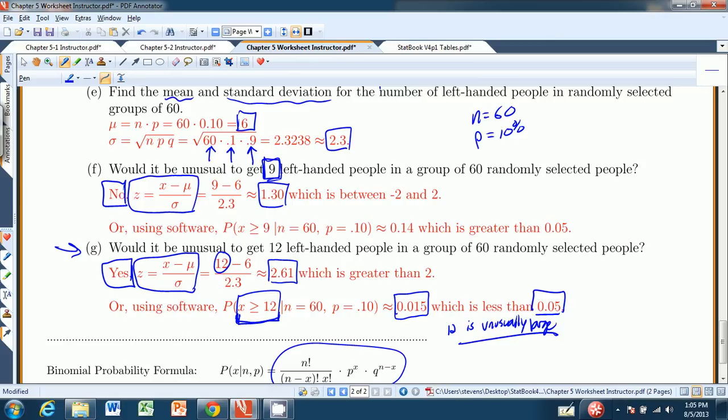So we have a couple of ways of determining whether a result is unusual. We can count standard deviations. Is it more than two standard deviations from the mean? If so, then that is unusual. But then we can also get unusually large and unusually small by finding the probabilities of getting as many and more, or as many as less than the actual value of x. So that wraps up Chapter 5 all the way around. Look forward to seeing you in Chapter 6. Bye now.